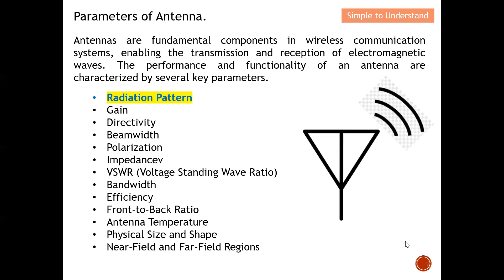An antenna is basically the fundamental component in any wireless communication system. Without an antenna, wireless communication cannot even function. Antenna is an essential part of any wireless communication because it enables both the transmission and also the reception of electromagnetic waves.